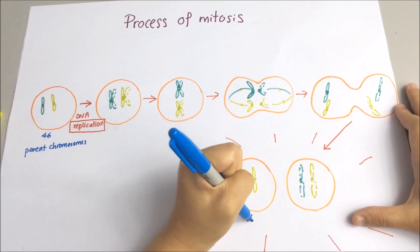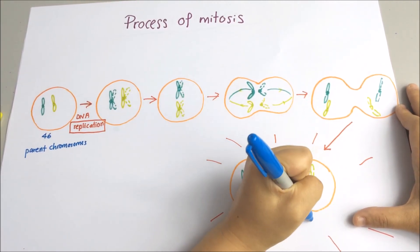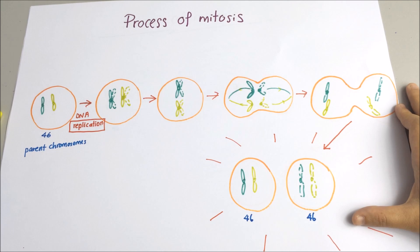So now let's compare our end product with the cell that we began with. You will find that they actually contain the same number of chromosomes. Here is two and here is two as well.